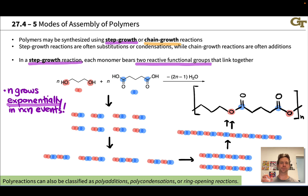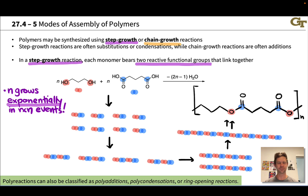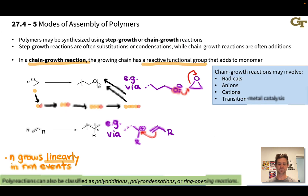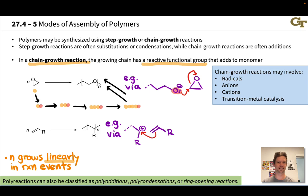Step growth reactions are often intrinsically slower — think of it as an alcohol plus an acid giving an ester, so the rate constant is lower. But we get a lot more bang for our buck with each reaction event due to the exponential growth in chain length. The intrinsic rate constant doesn't need to be high in step growth because of that exponential growth. In chain growth, however, we need a really reactive functional group on the end of the growing polymer chain to ensure a reasonable degree of polymerization in a reasonable length of time.